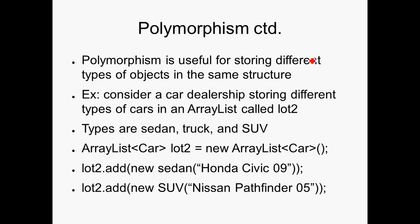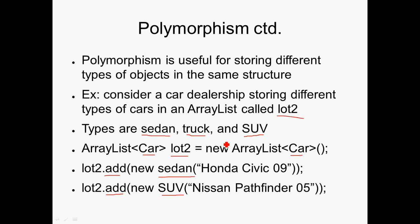Polymorphism is useful for storing different types of objects in the same structure. Consider a car dealership storing different types of cars in an ArrayList called lot2. Let's say we have our superclass called Car, with subclasses of Sedan, Truck, and SUV. We declare lot2 as a new ArrayList of type Car. Then we can add a new Sedan — a Honda Civic, for example — and we can also add a new SUV. We have different types of data inside lot2, yet they can all be added because they all inherit from type Car. That's a simple example of how polymorphism works.